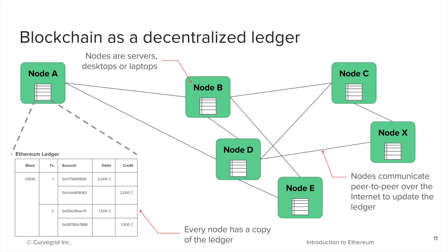At a higher level, the Ethereum blockchain is made of millions of nodes. Each node has a copy of the complete ledger. Nodes communicate with one another over the internet in a peer-to-peer fashion. These millions of copies are what gives this decentralized ledger its tamper resistance and security.